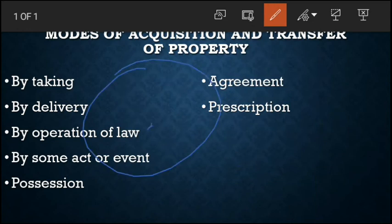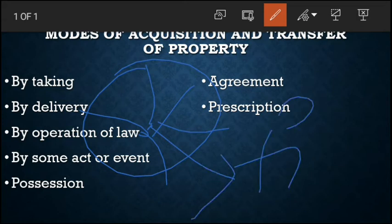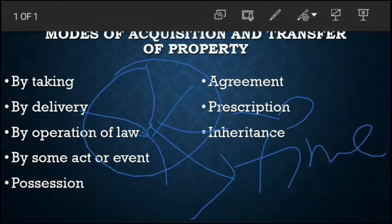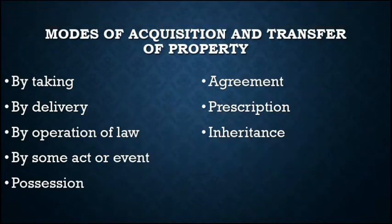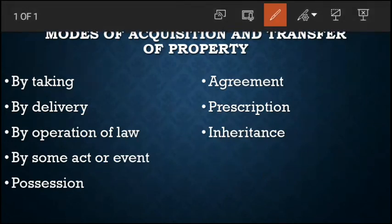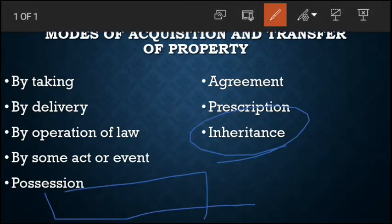Another method is inheritance. Inheritance means the property of a father or mother ultimately goes to the son or daughter. Whatever earnings or property the parents accumulated — it gets transferred. That's called inheritance.